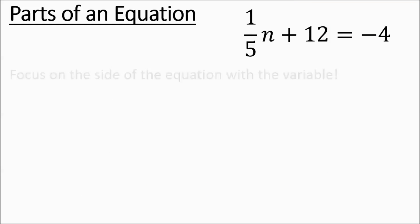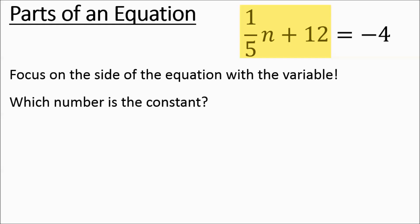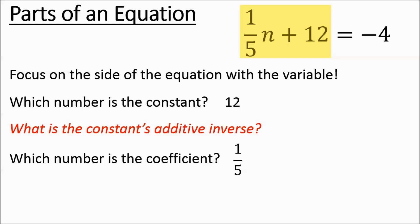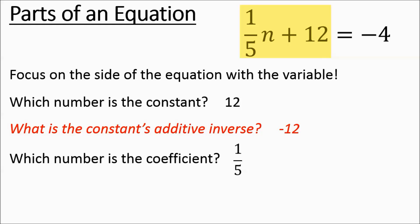We're going to tune into the left side of the equation — that's where the variable is. The constant is going to be a 12, and the coefficient is going to be 1 fifth. The constant's additive inverse: the opposite of positive 12 is negative 12. The multiplicative inverse of 1 fifth is going to be 5 over 1 — you could also think of it as just 5.